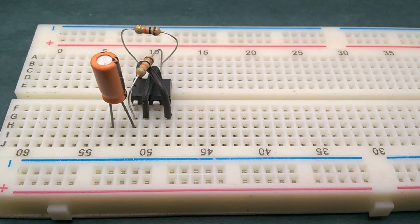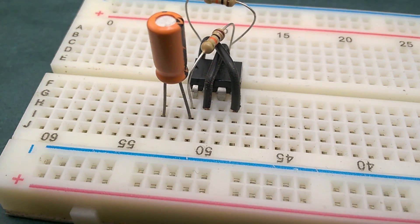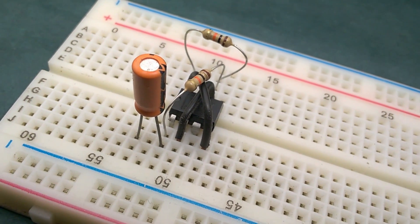Now, place a 1uF capacitor on the breadboard with its negative terminal connected to pin 1 of the IC. This is how negative terminal of the capacitor is marked.